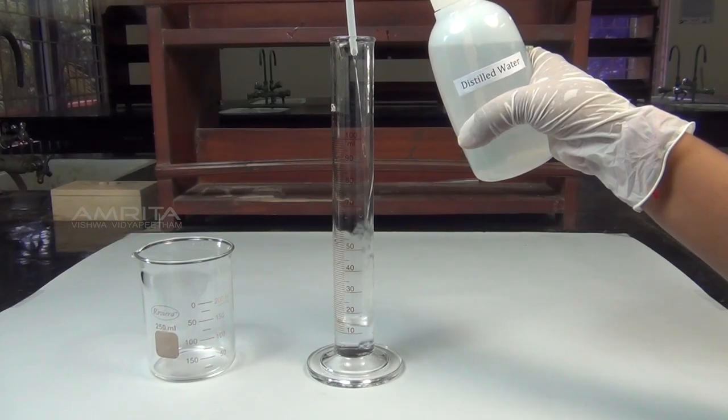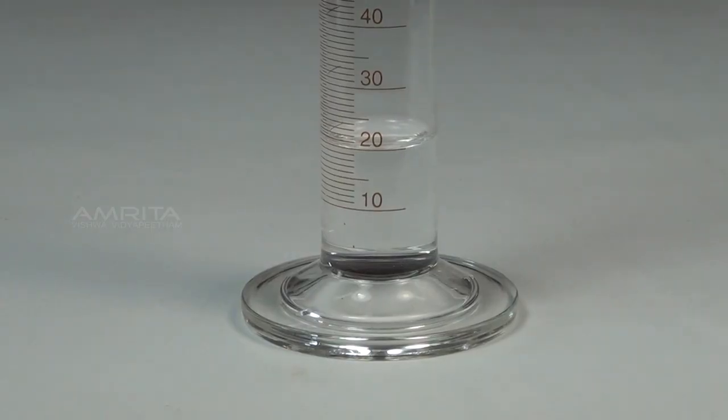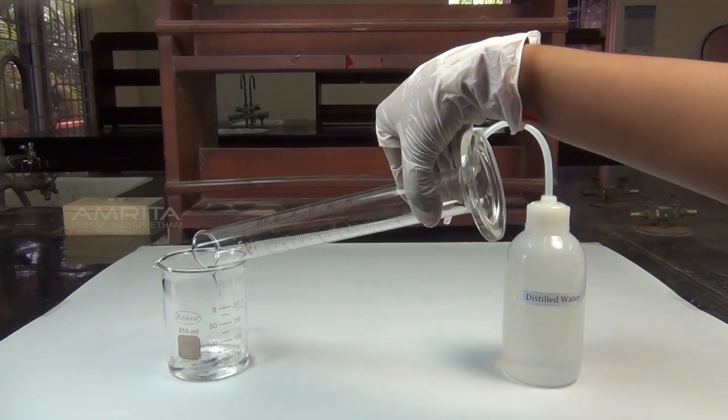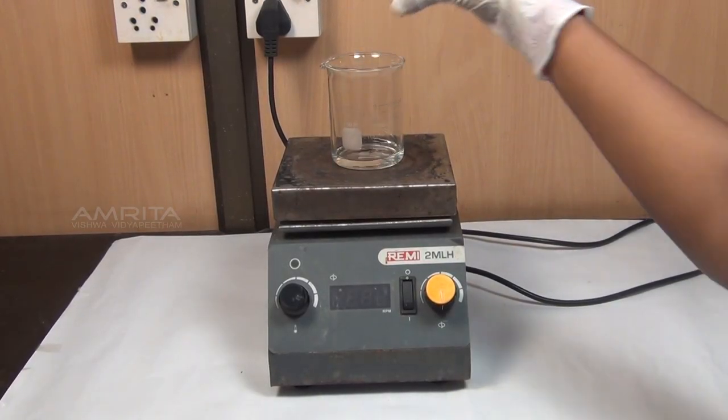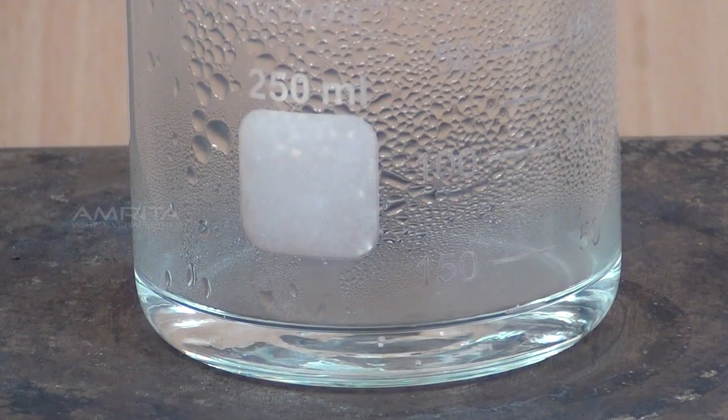Now measure about 20ml of distilled water in another measuring jar. Transfer it into another 250ml beaker. Boil the water in the beaker for about 5 minutes over the hot plate to expel the dissolved air.